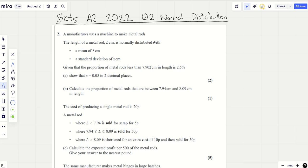Hello and welcome to another question. This time it's question 2 from Stats Paper 2022 on the normal distribution. What have we got here? A manufacturer uses a machine to make metal rods, normally distributed with a mean of 8 and a standard deviation of x. It looks like it's going to be one of those standardisation questions. Draw a little diagram, that's often quite handy.